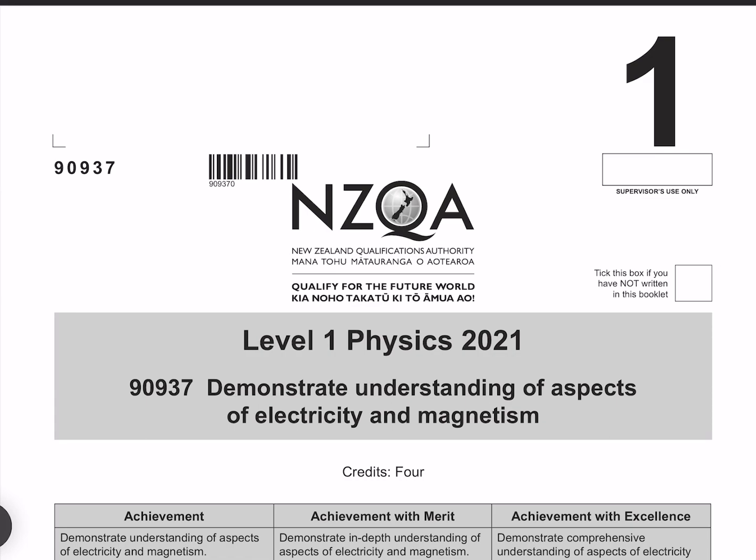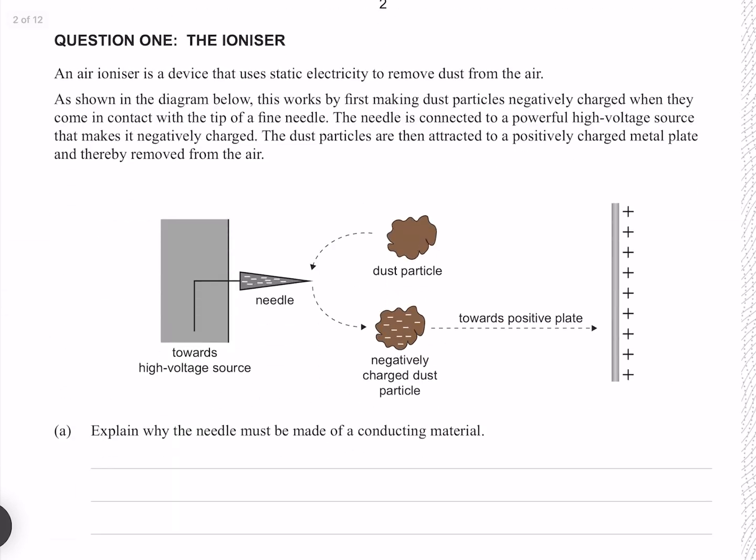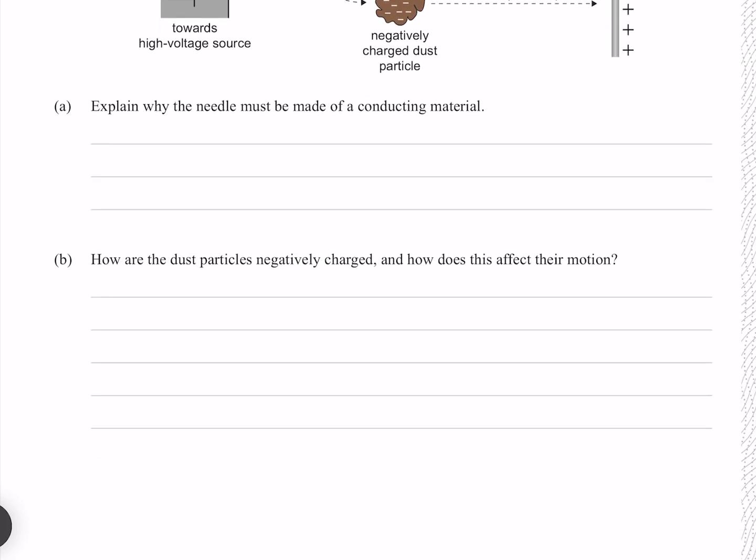In this video I'll be going through the 2021 electricity and magnetism paper. Question one: an air ionizer is a device that uses static electricity to remove dust from the air. This works by first making dust particles negatively charged when they come in contact with the tip of a fine needle. The needle is connected to a powerful high voltage source that makes it negatively charged. The dust particles are then attracted to a positively charged metal plate and thereby removed from the air.